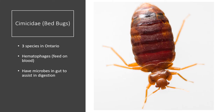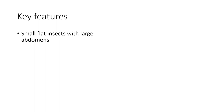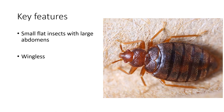Cimicidae — bed bugs. There are three species of bed bugs in Ontario. They are hematophages, meaning they feed on blood, and they have microbes in their guts that aid in digestion. Key features: they are small, flat insects with large abdomens, they are wingless, and they have a horizontal stripe on their abdomen which helps the abdomen extend when filled with blood, so the insect doesn't explode when engorged.